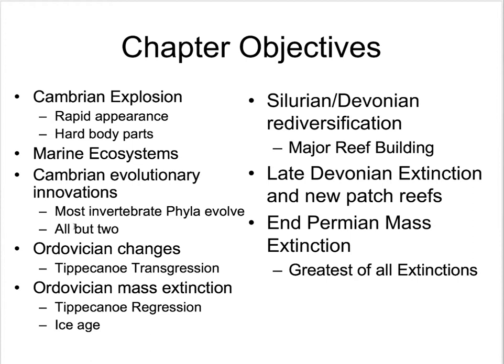Bryozoans really developed in the Ordovician. The Cnidarians, which are the jellies and corals, were in the Neoproterozoic before the Cambrian. In the Ordovician, we see a rapid diversification of life, probably more so than the Cambrian, in terms of new ecological niches opening up due to the transgression of the Tippecanoe Sea. But then Gondwana starts moving over the South Pole, glaciers advance, sea levels drop, we lose that shallow shelf environment, and there's a mass extinction during the regression of the Tippecanoe Sea.